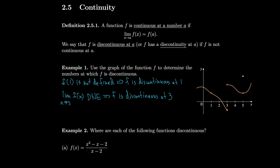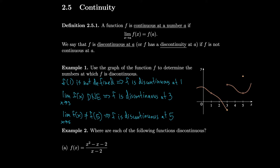For our last case, f is defined at x=5, and the limit from the left equals the limit from the right, so the limit exists at 5. However, the limit does not equal the value of the function — the value of the function is much higher. So f is discontinuous at 5. You can see there's a lot that can go wrong when checking whether a function is continuous.